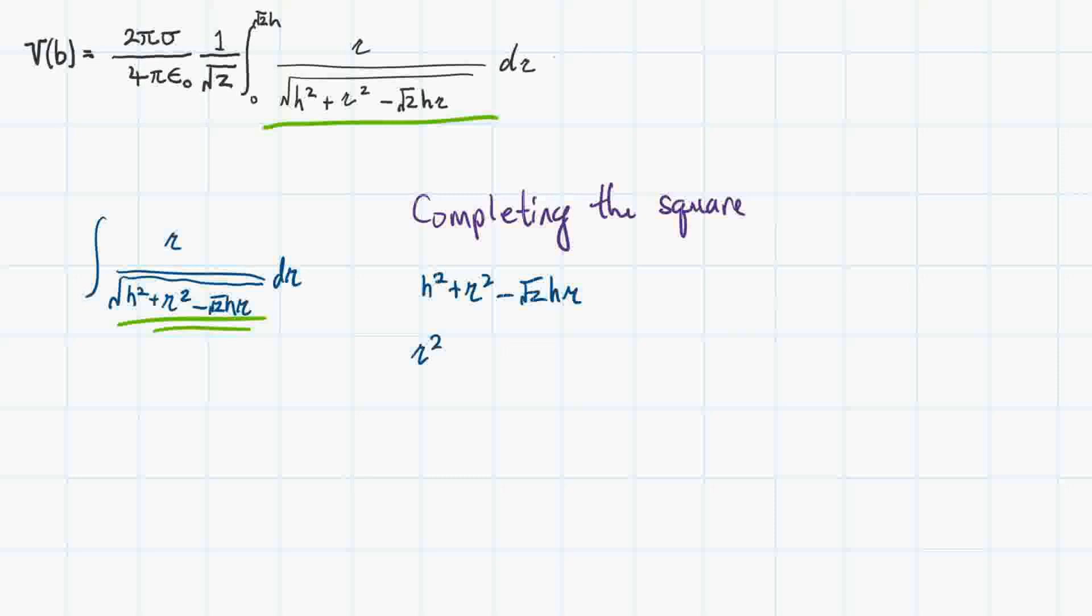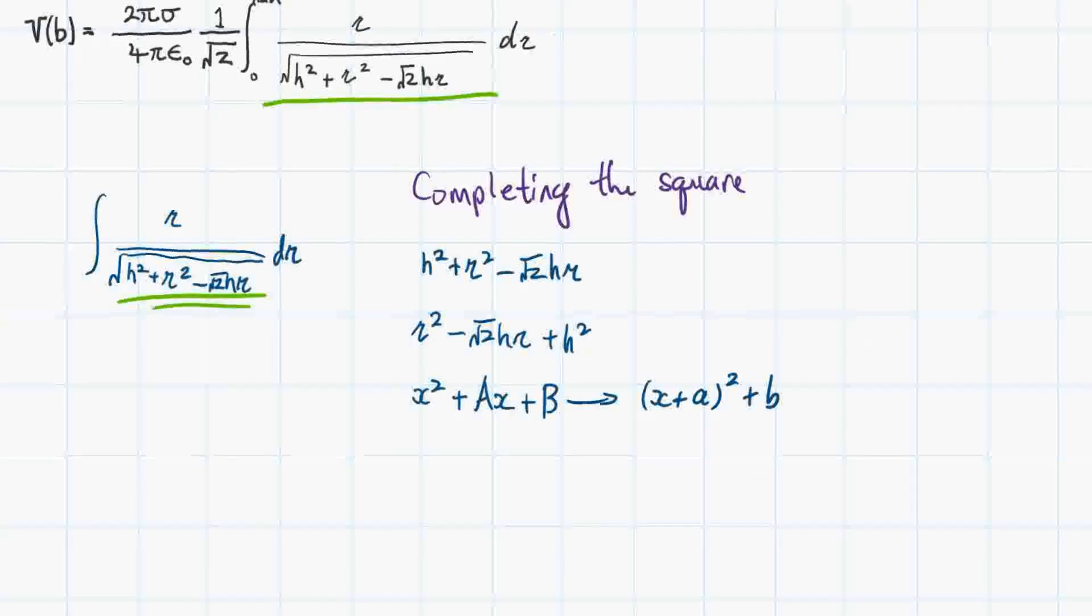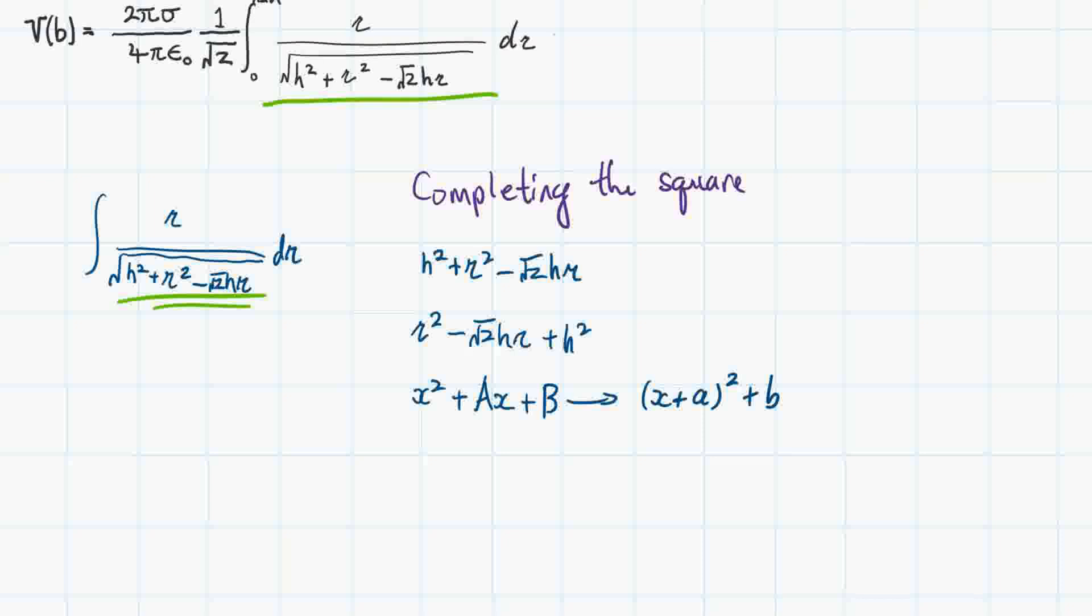r squared comes first, then minus square root of 2hr. That's in a similar form to, say, x squared plus capital A times x plus B. The good thing with that is you can convert it into a form that looks like x plus small a squared plus b. The value of small a is capital A divided by 2, and the value of small b will be capital B minus a squared divided by 4.